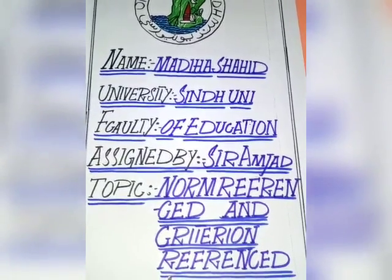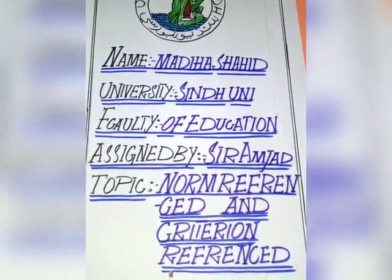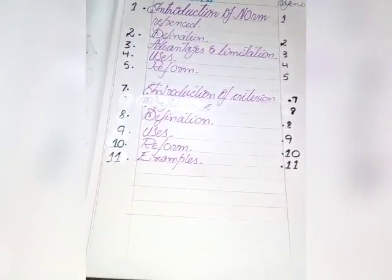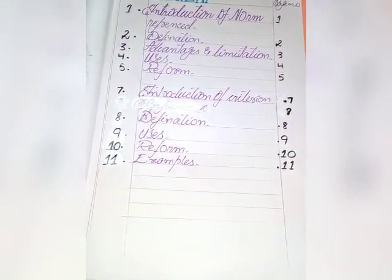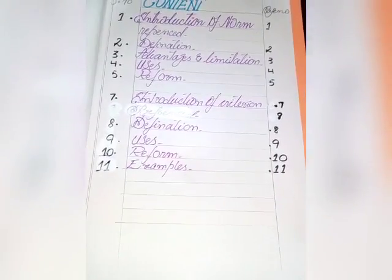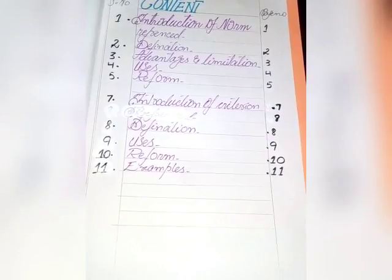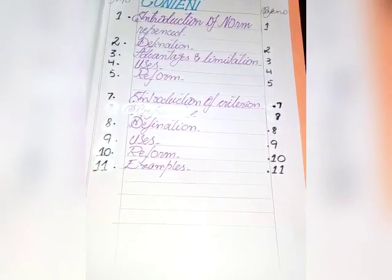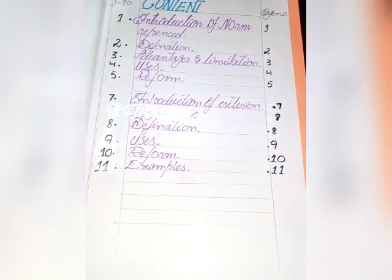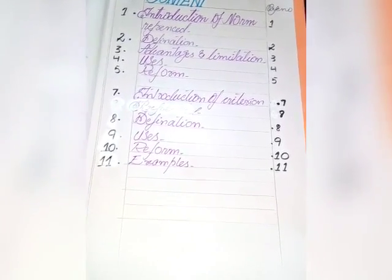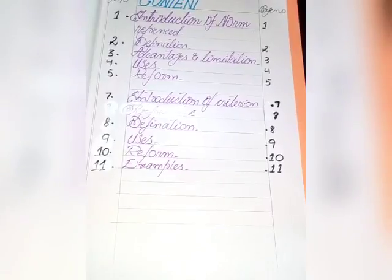Assalamualaikum. My name is Madhi Ashayat and the topic is Norm Reference and Criterion Reference. The following topics are covered: introduction of norm reference, definition, advantages and limitations, uses, reform, and then introduction of criterion reference, definition of criterion reference, uses, reform, and examples.